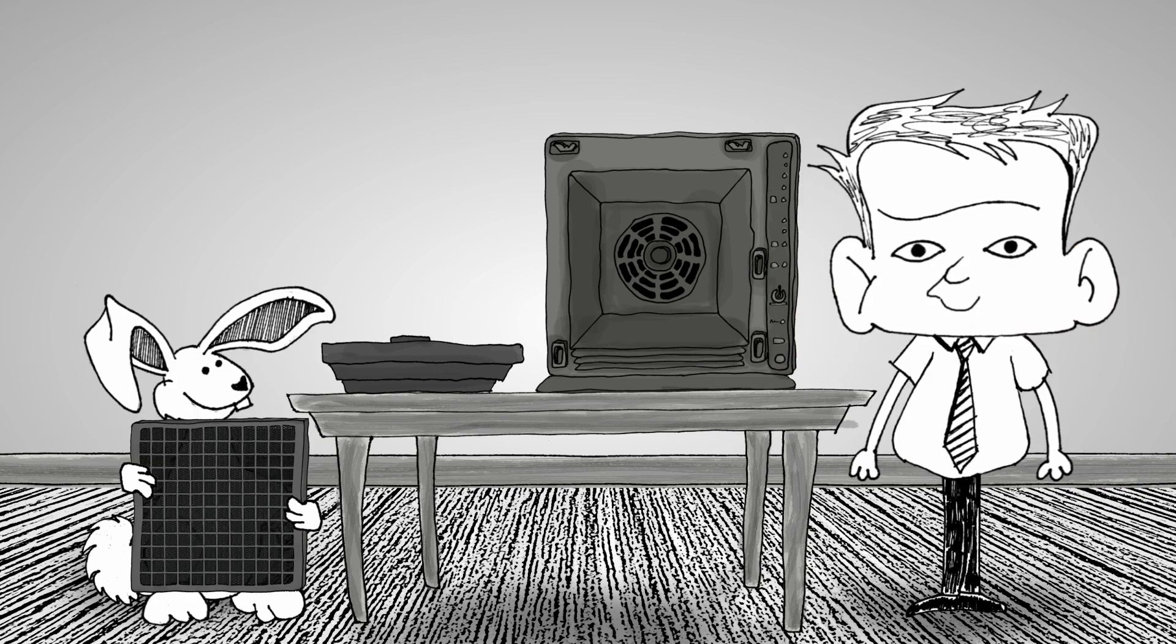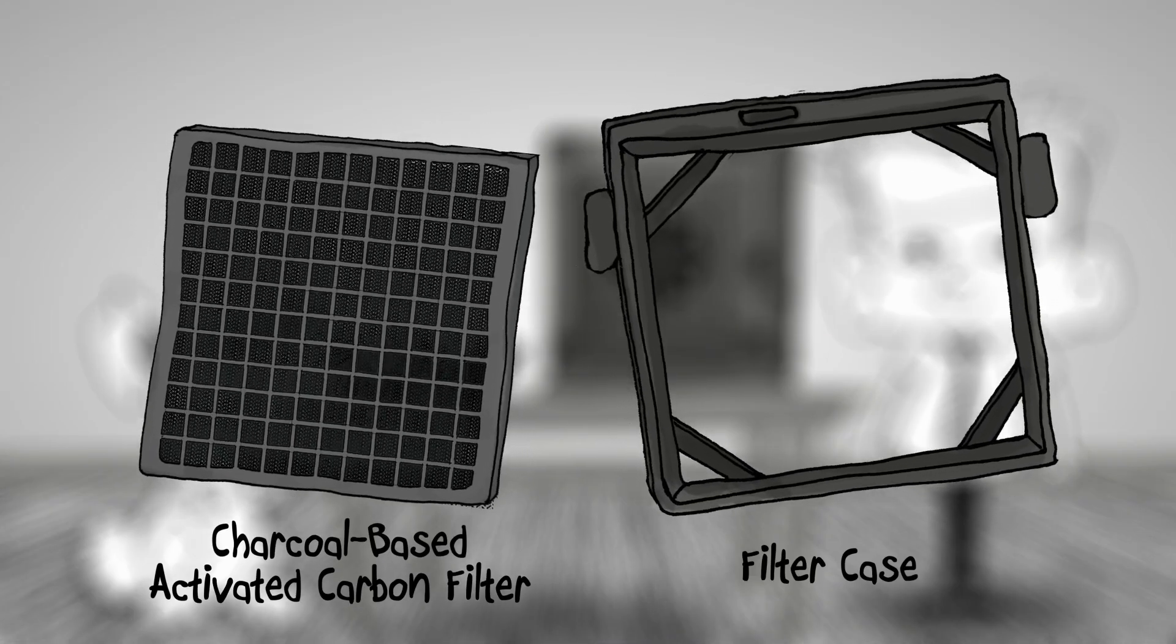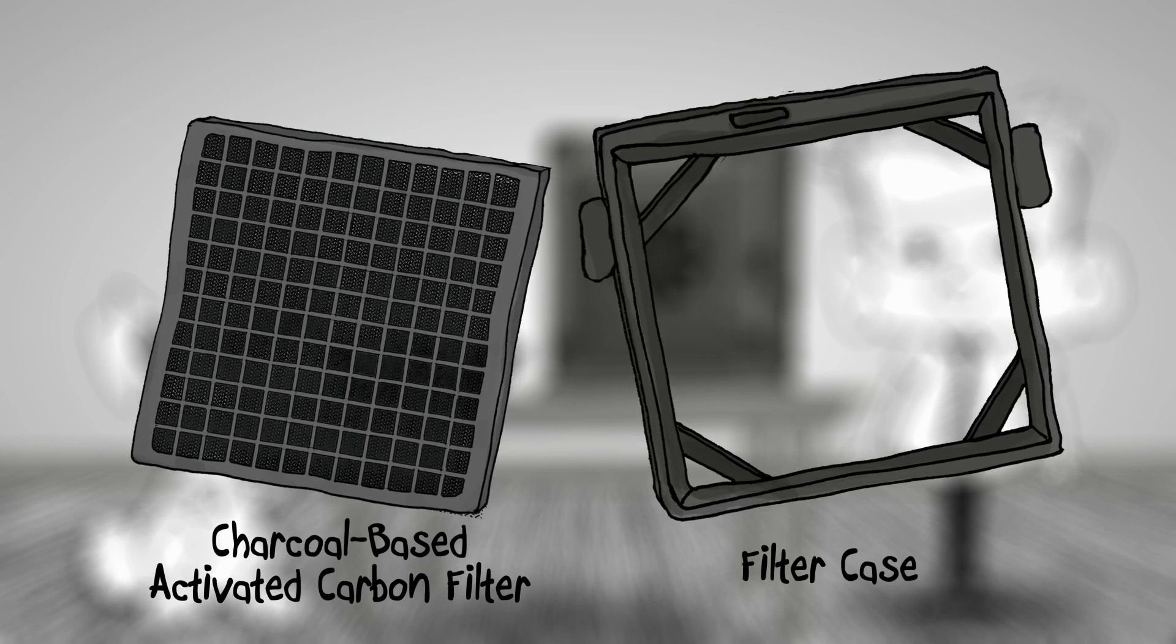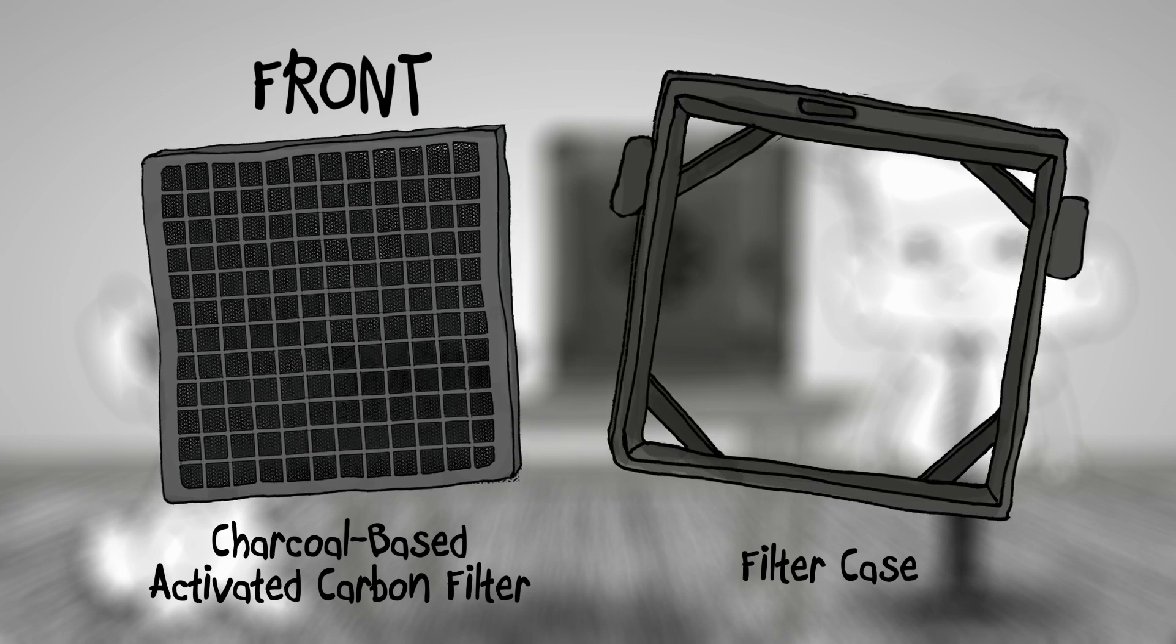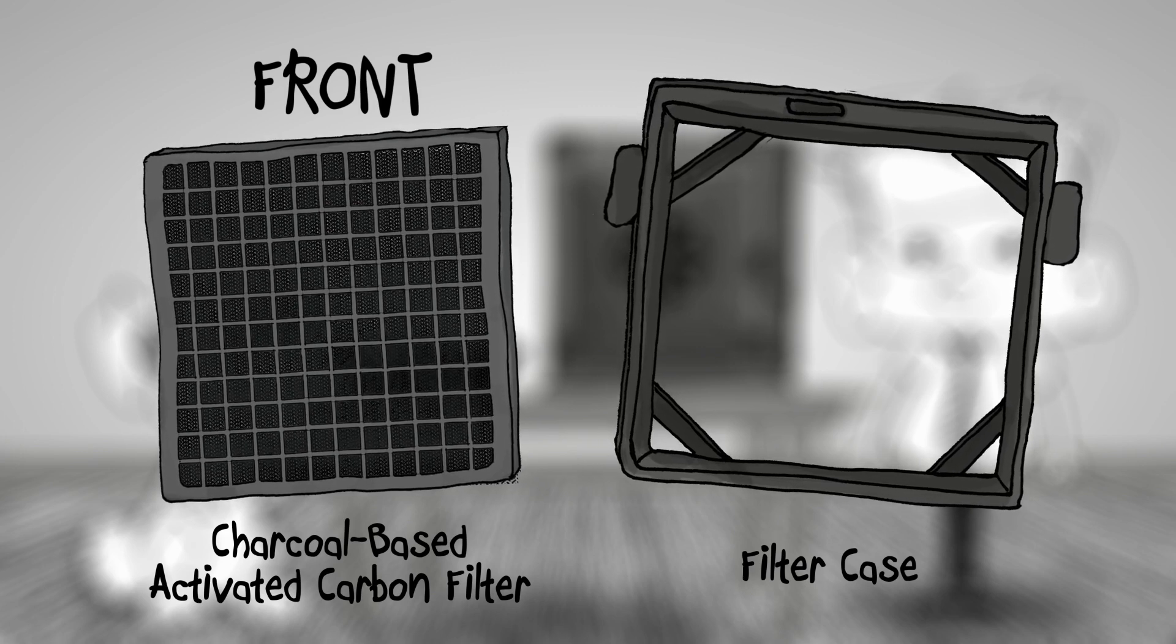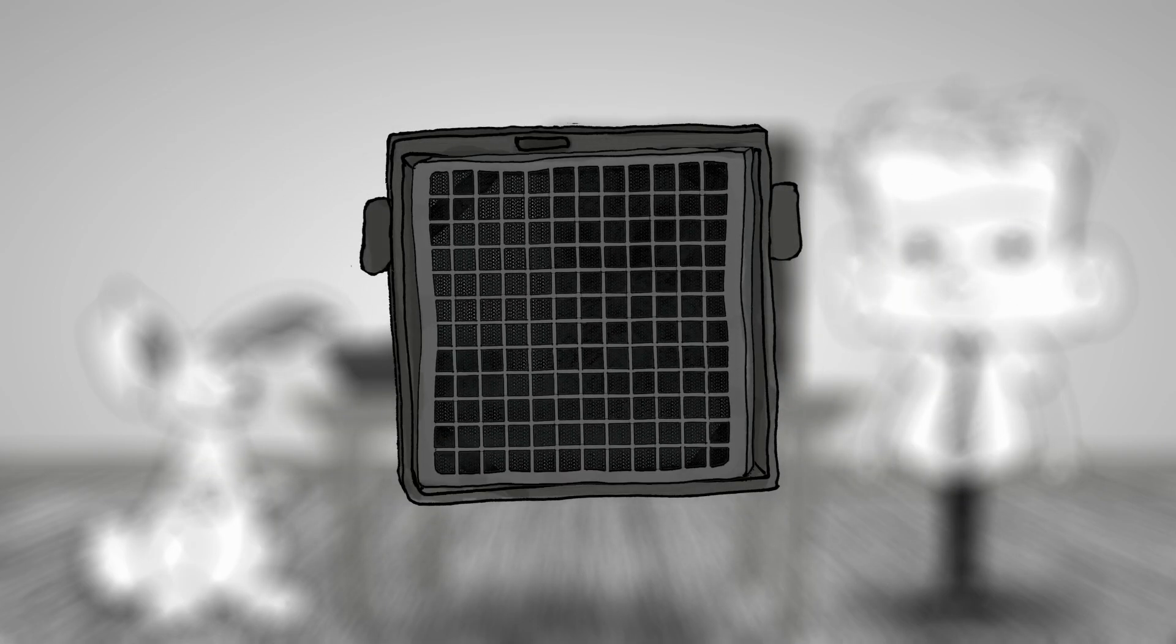This is a directional filter, meaning that it must face a specific direction in order to effectively trap pollutants. You will see the word 'front' located at the top border of the filter. The word 'front' should be facing up. This means the front of the filter will be facing you as you install it.